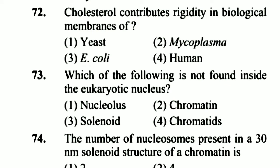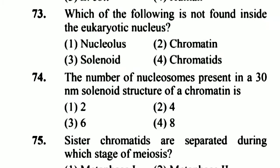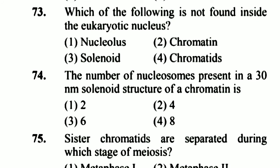Question 72: Cholesterol contributes rigidity in the biological membranes of humans. Option 4 is right. Question 73: Which of the following is not found inside the eukaryotic nucleus? Chromatids. Option 4 is right; chromatids are not found inside the eukaryotic nucleus.